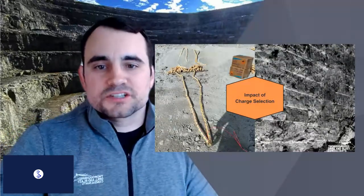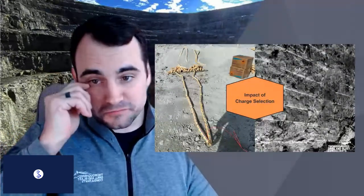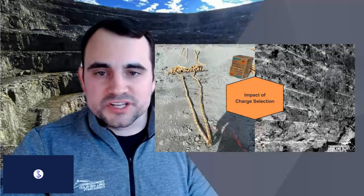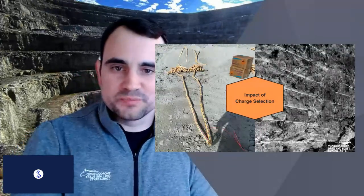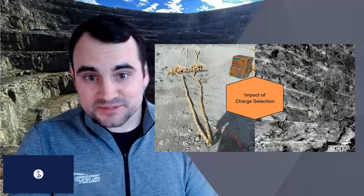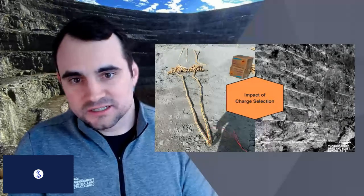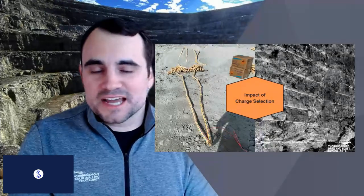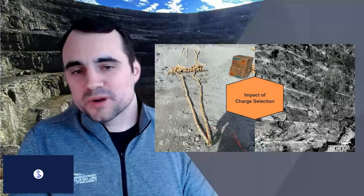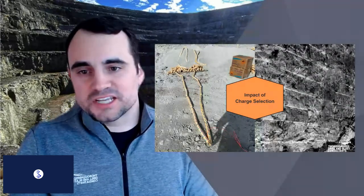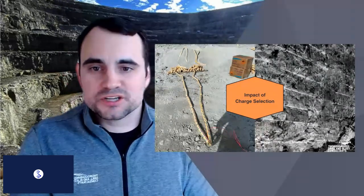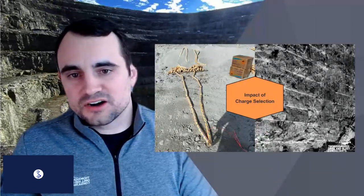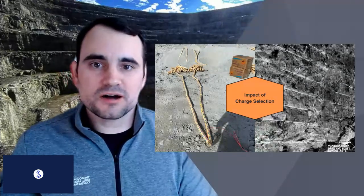For charge selection: the right image shows nice half-barrels, but there's a zone between two rounds where the pre-split stops and it looks bulk-blasted. This could be because the toe charges were fully coupled, causing back break in that area. It's critical to understand that if you double or triple up the bottom toe charge, or use a larger diameter toe charge, it can negatively affect the final results of your perimeter control.